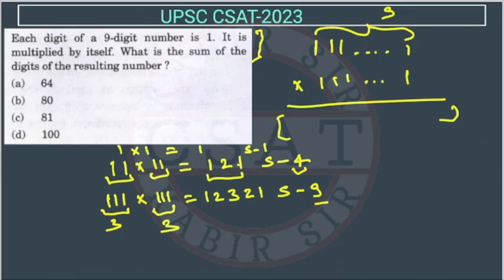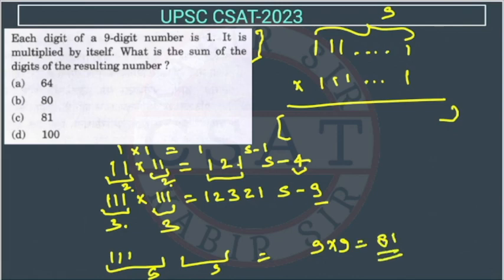So can you see the pattern? This is 2×2, 2 into 2 is 4, 3 into 3 is 9. So suppose I am taking here 9 numbers, this is total 9 and total 9 here, so the summation will be 9 into 9 equal to 81. So the summation will be 81. So the answer is C.